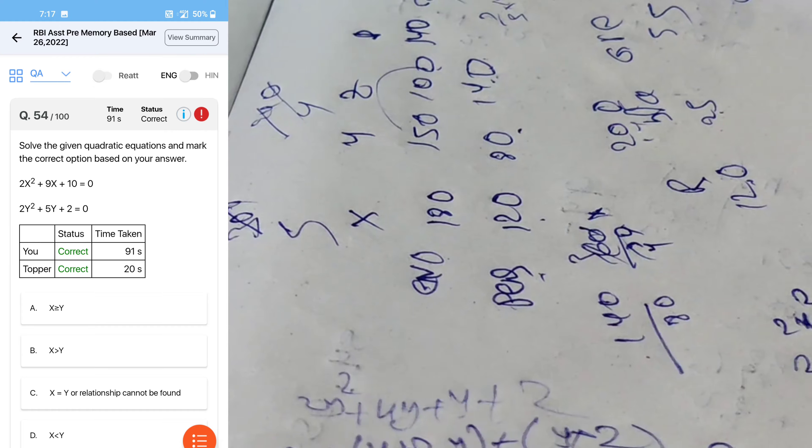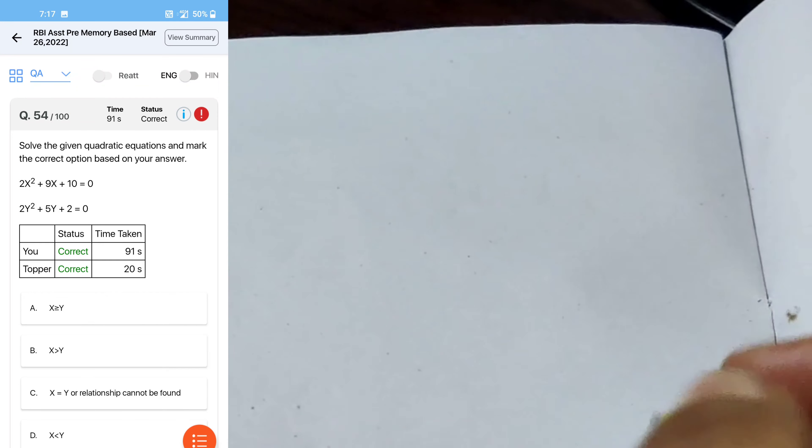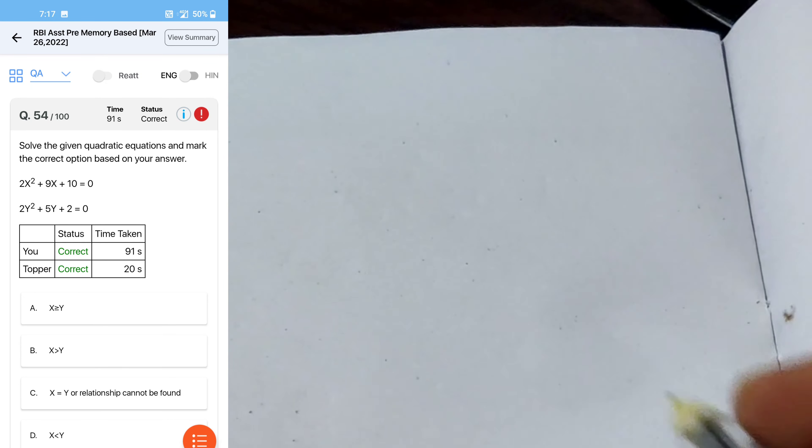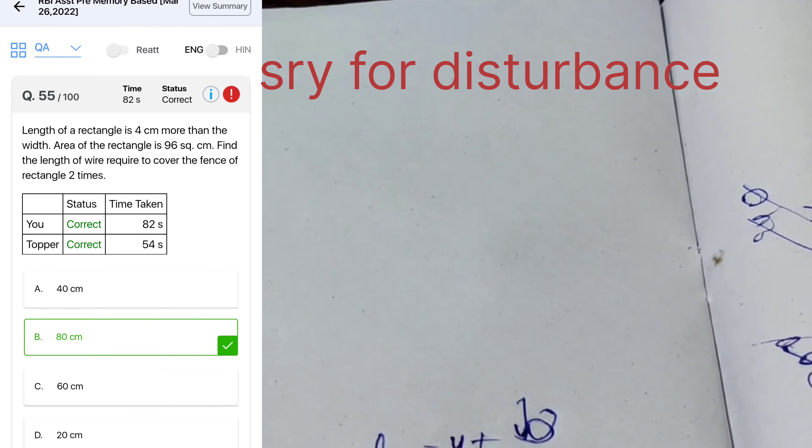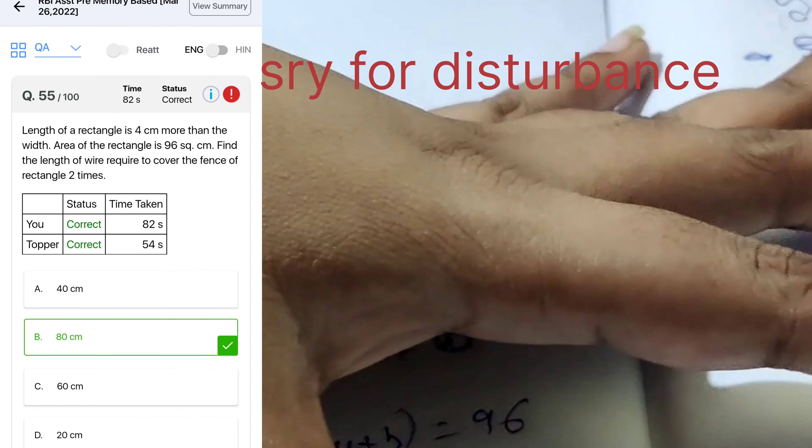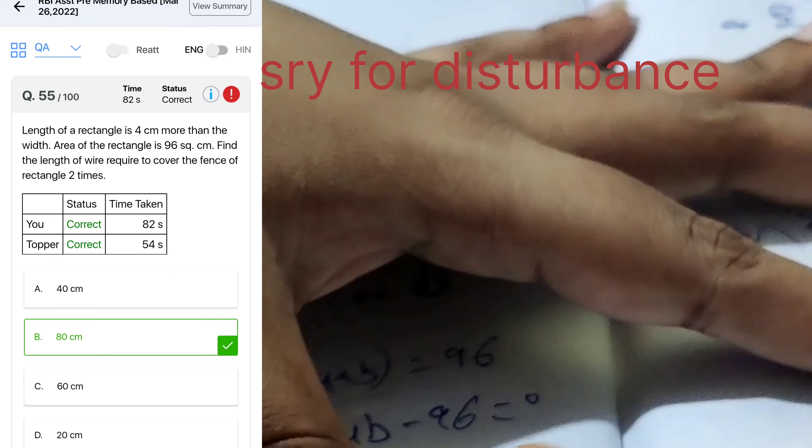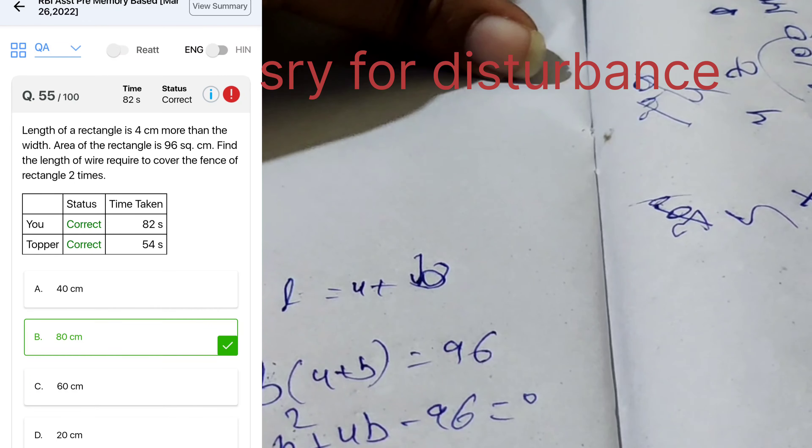Next question, the length of rectangle is 4 more than width. Area of the rectangle, so b, 4 plus b, 96. b squared plus 4b minus 96. b squared plus 12 minus 8 minus 96. b equal to 8 and l equal to 12. So here length of the wire is 12 required to cover the fence of rectangle 2 times.